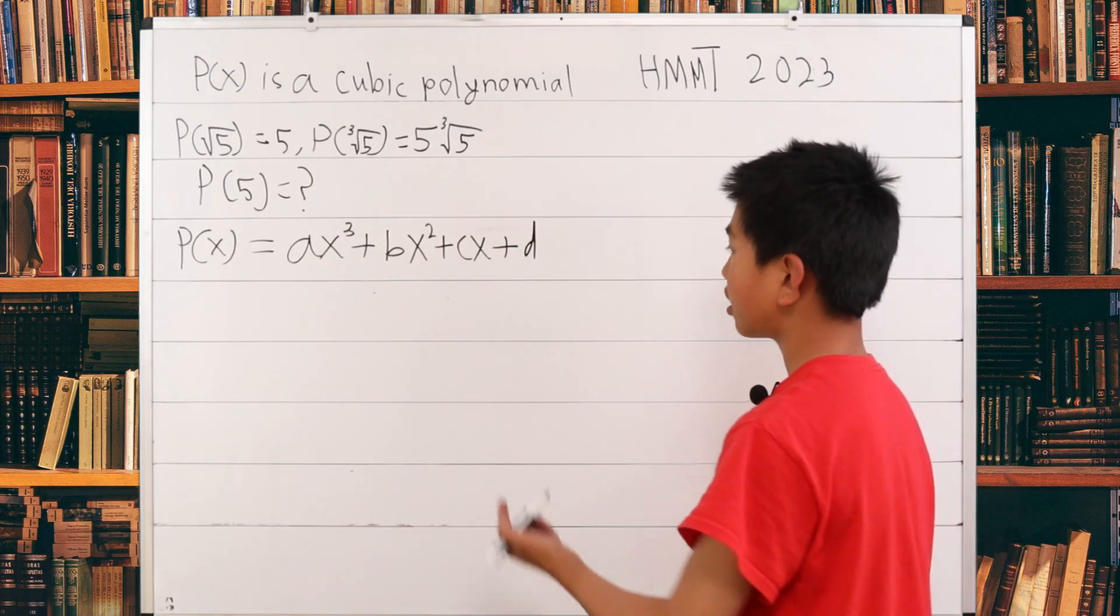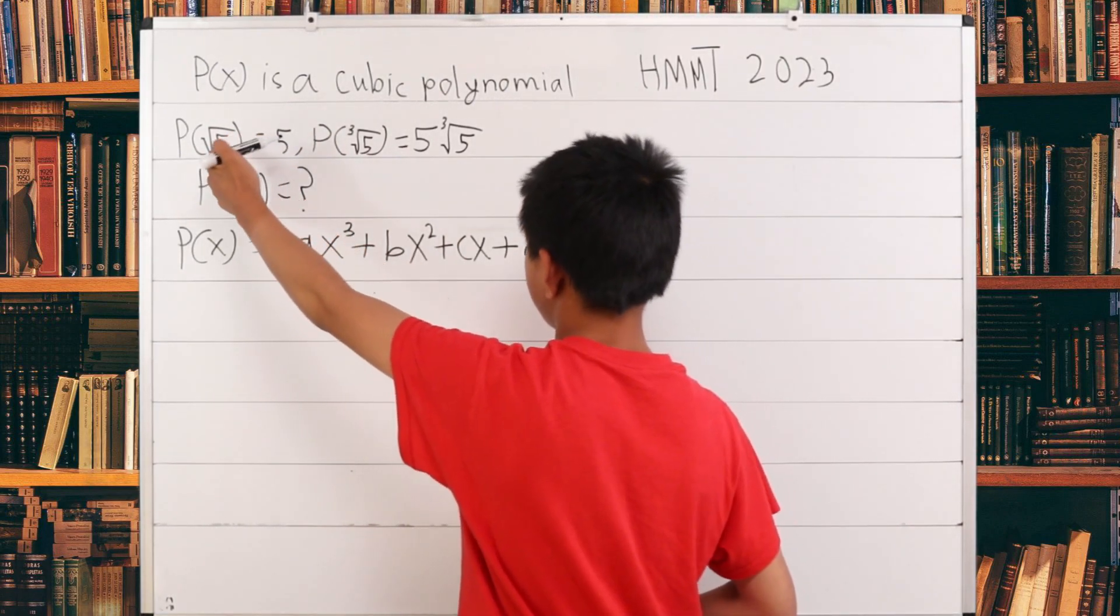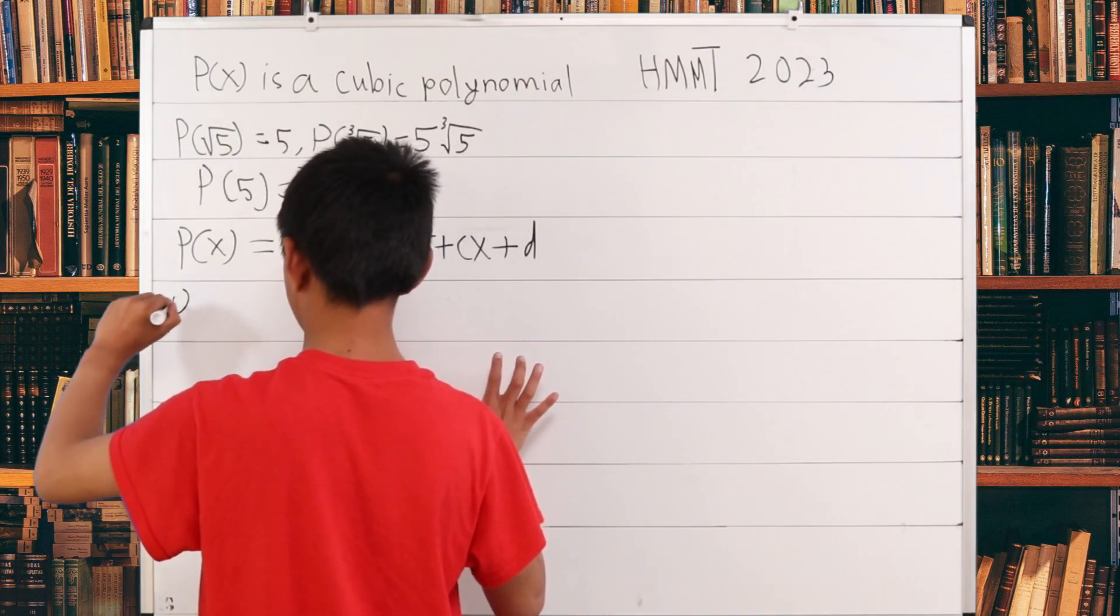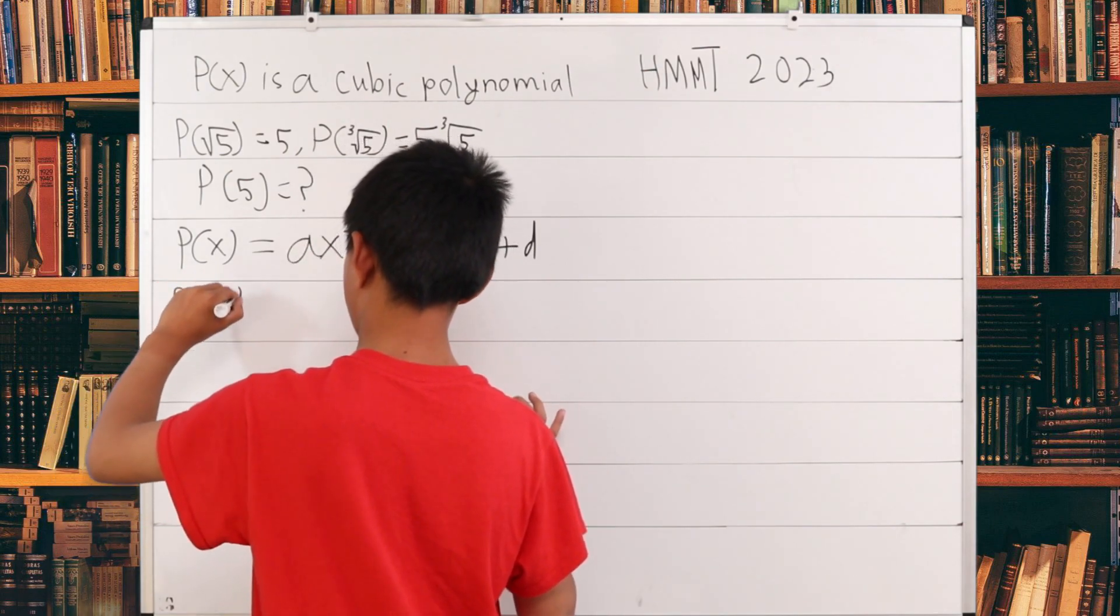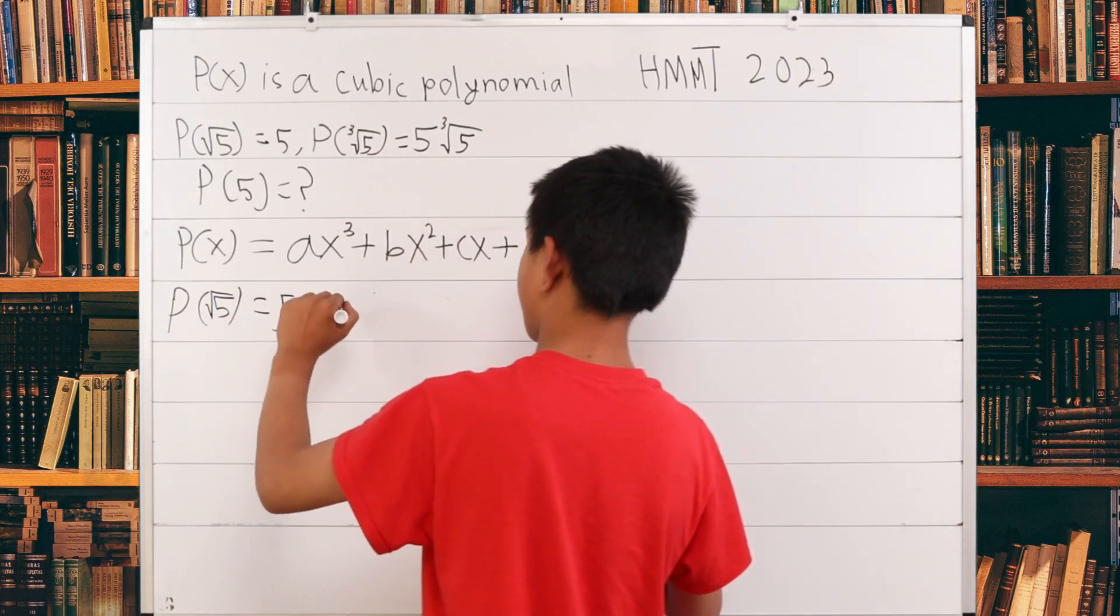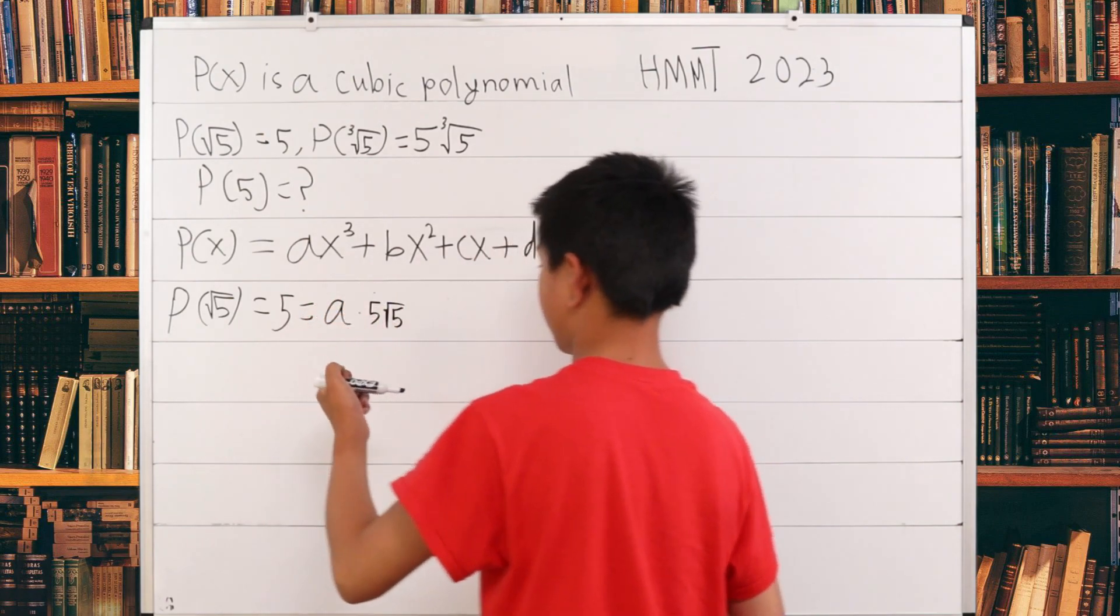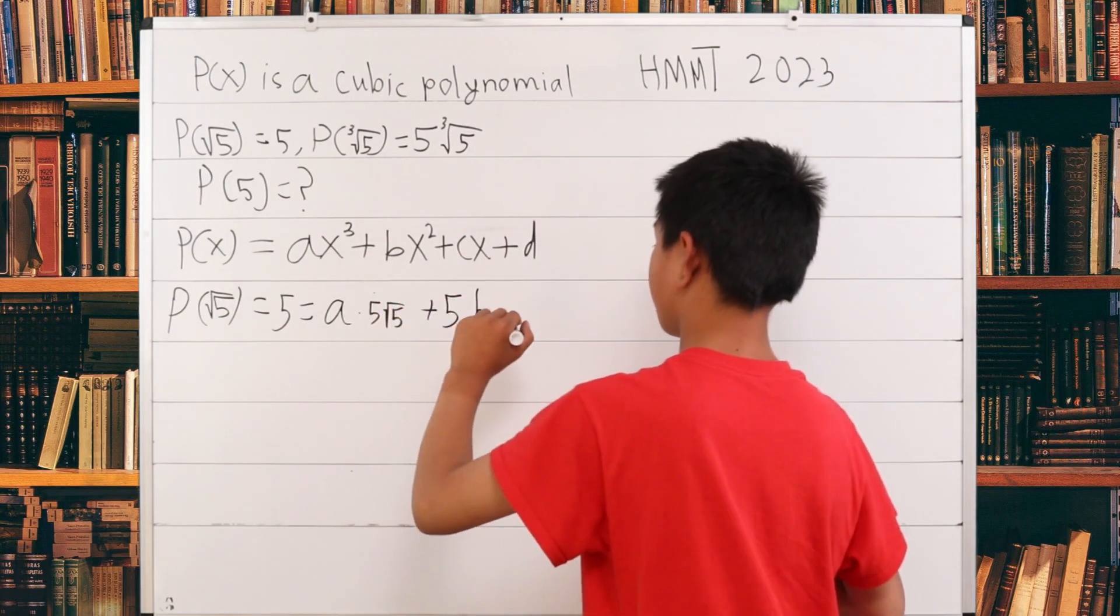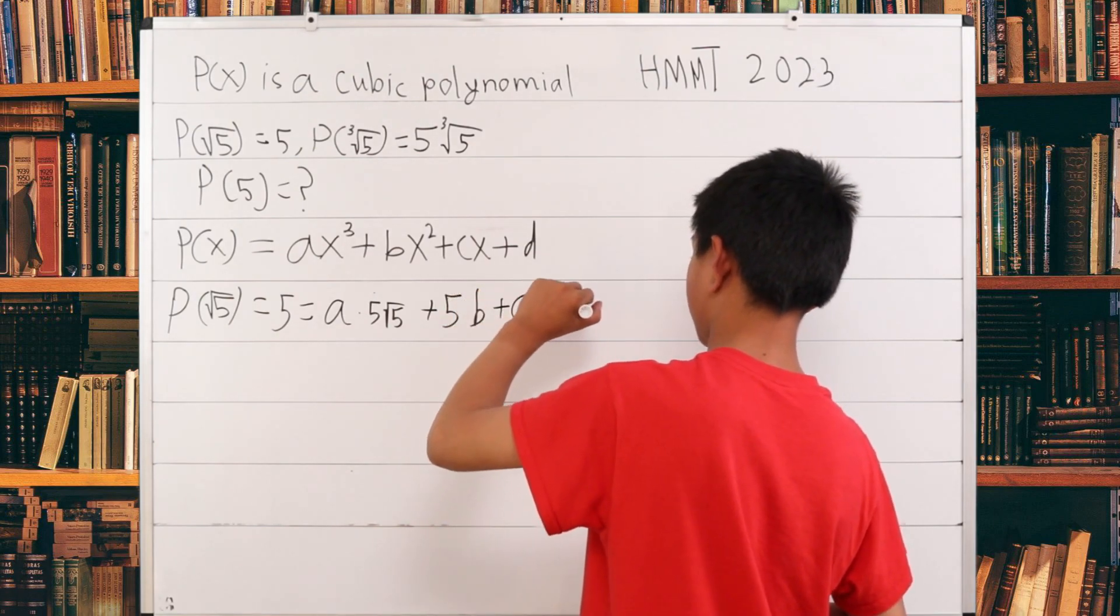Now, we can put this in with the first constraint. Since we are given that P(√5) = 5, this is our x. So P(√5) = 5. This is also equal to a times 5√5 plus 5b plus c√5 plus d.